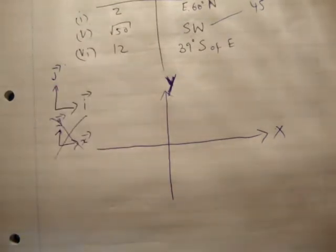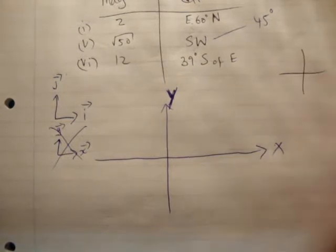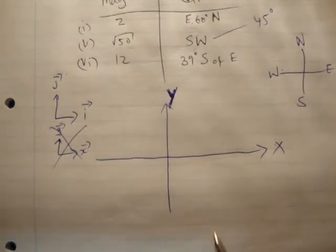This vector here, vector 1, has got a magnitude of 2 units in a direction of east 60 degrees north. Remember if you have your compass, we have N, S, E, W. That's a Cartesian plane as well. Where's east? It's along the x axis.